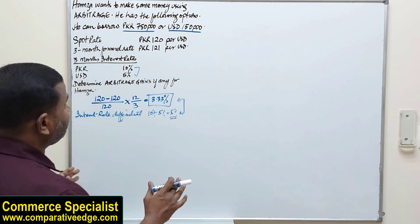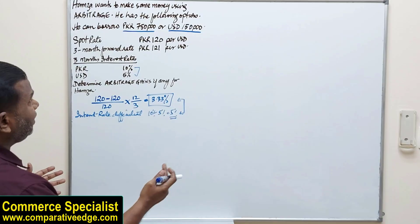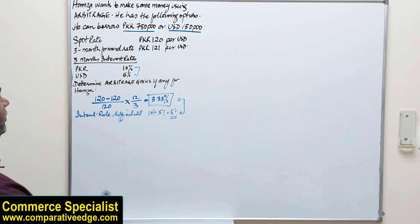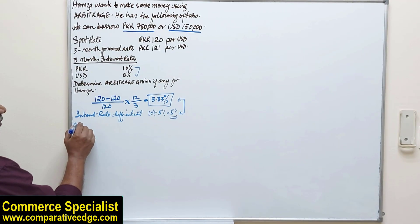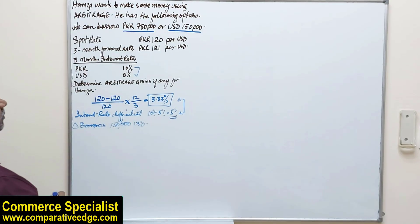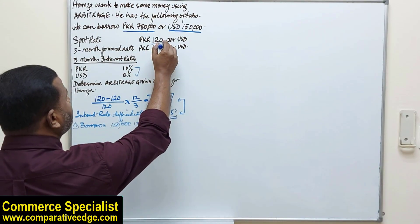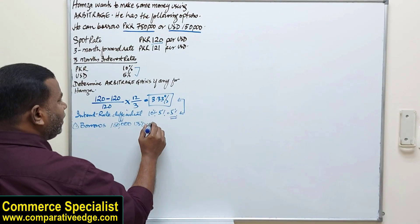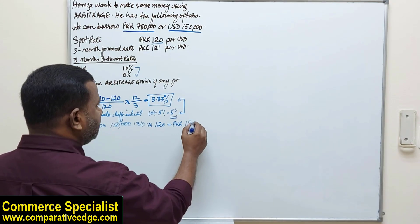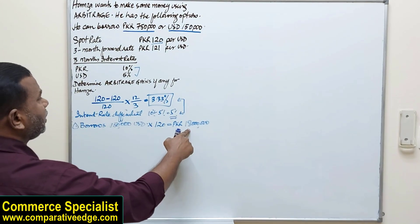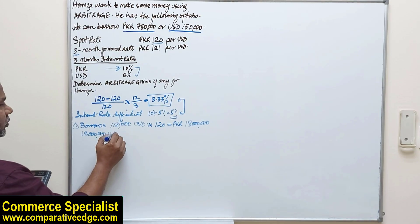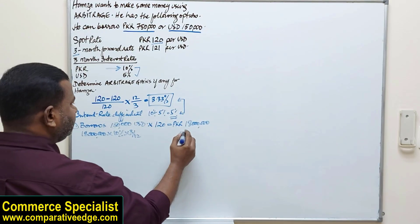So what is Mr. Hamza going to do? He works in a treasury function and wants to use the money market to make some money. Since the interest rate is lower in USD, he will borrow 150,000 USD. He immediately converts it at the spot rate into Pakistani rupees: 150,000 × 120 = PKR 18,000,000. He then deposits this 18 million at 10% interest for 3 months.